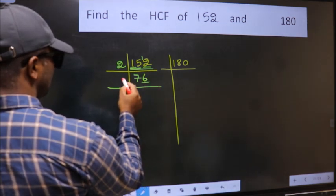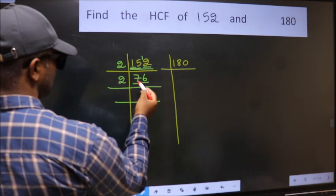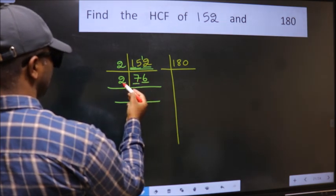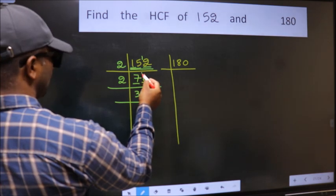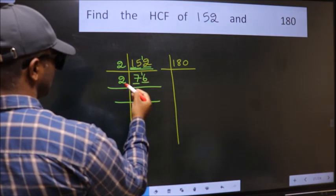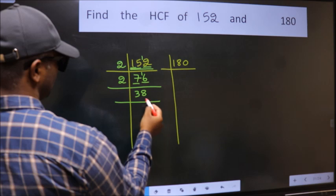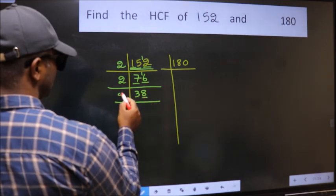Last digit is 6, even, so take 2. First number is 7. A number close to 7 in the 2 table is 2 times 3, 6. 7 minus 6 is 1, 1 carried forward gives 16. When do we get 16 in the 2 table? 2 times 8 is 16.